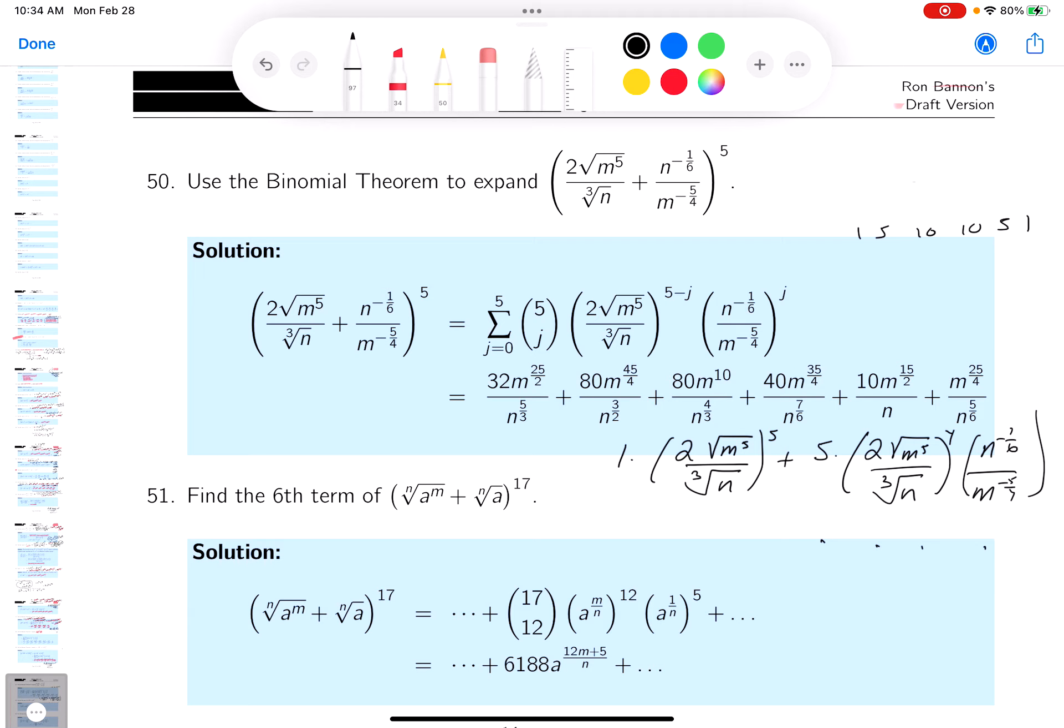So when I did it, I got this answer over here. When I did all that work, I got this answer over here. But again, the pattern's easy to write down. It's a simplification. Could I have made an error? Of course I could have made an error.